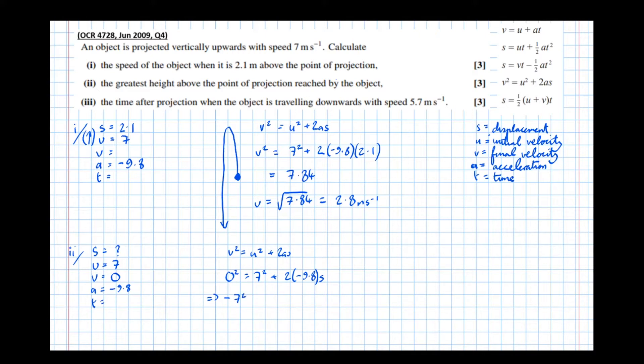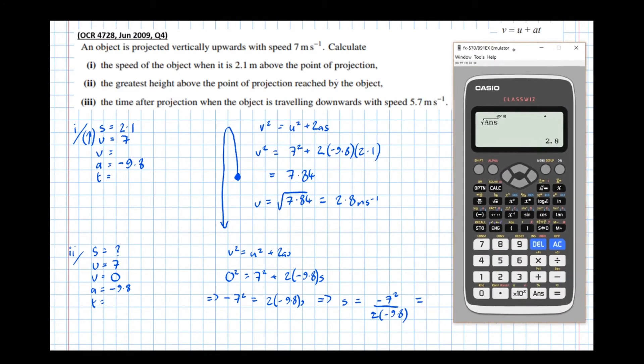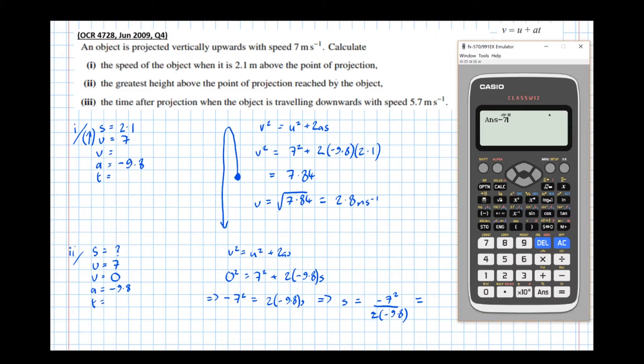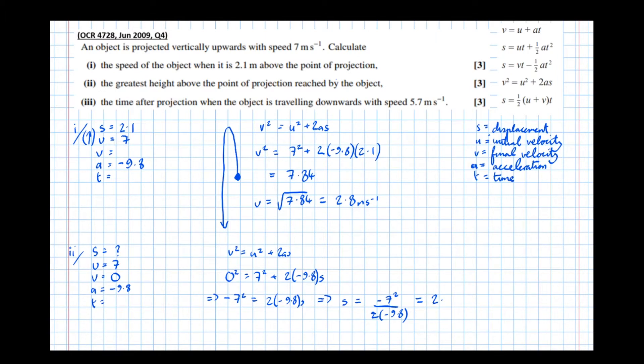Which means that minus 7 squared equals 2 times minus 9.8s. Which means that s equals minus 7 squared over 2 times minus 9.8 equals, and putting that in the calculator, minus 7 squared over 2 times minus 9.8 equals 5 over 2, or 2.5. 2.5 meters.